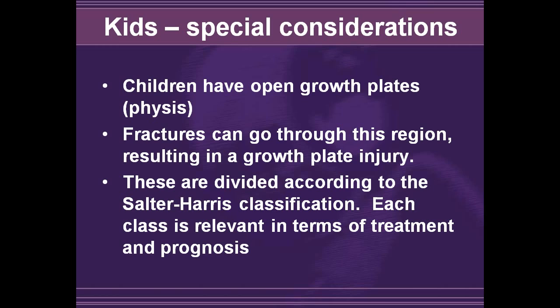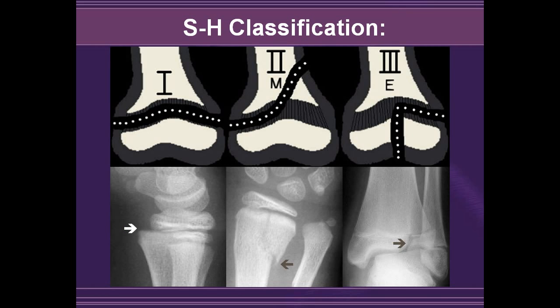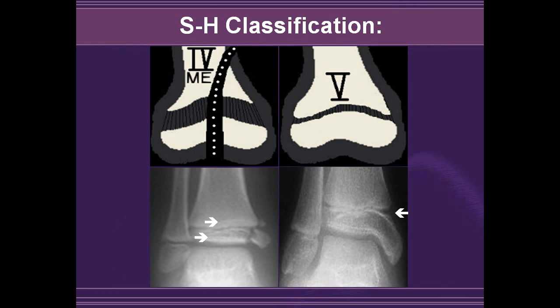Children also have growth plates called physes, which are important for growth. Fractures can go into this region and result in growth plate injury. The classification for this type of fracture is called the Salter-Harris classification, and there are five most common types. A useful mnemonic is 'ME-ME': type 1 is a widening of the physis; type 2 is through the metaphysis (first M); type 3 is through the epiphysis (E); type 4 is through both the metaphysis and epiphysis (second ME); and type 5 is a crush injury — the opposite of type 1.